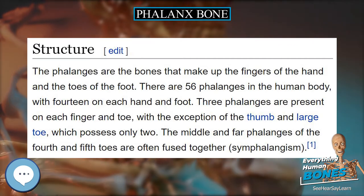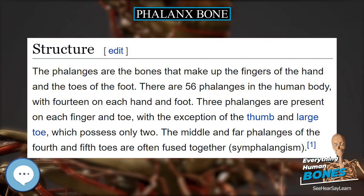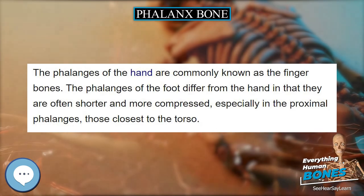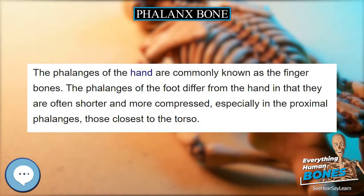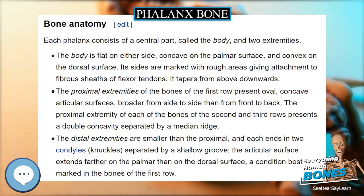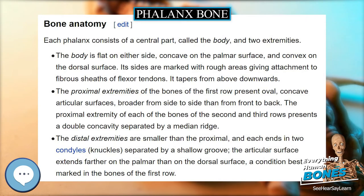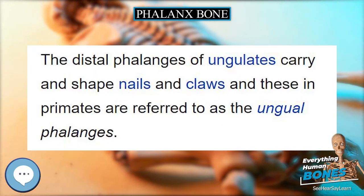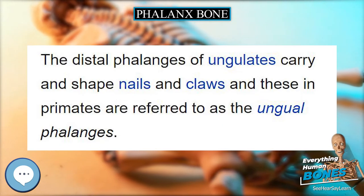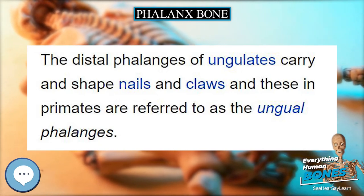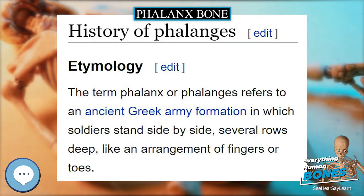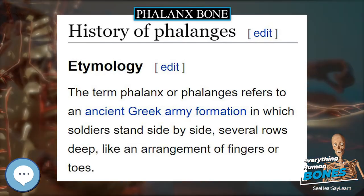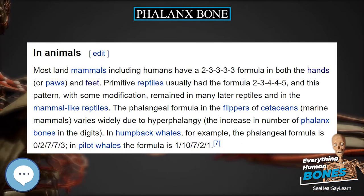The proximal phalanges are those that are closest to the hand or foot. In the hand, the prominent, knobby ends of the phalanges are known as knuckles. The proximal phalanges join with the metacarpals of the hand or metatarsals of the foot at the metacarpophalangeal joint or metatarsophalangeal joint. The intermediate phalanx is not only intermediate in location, but usually also in size. The thumb and large toe do not possess a middle phalanx.